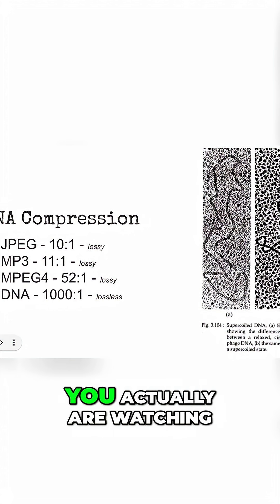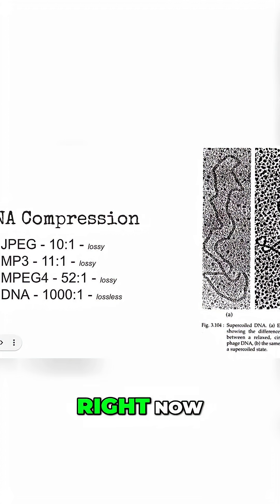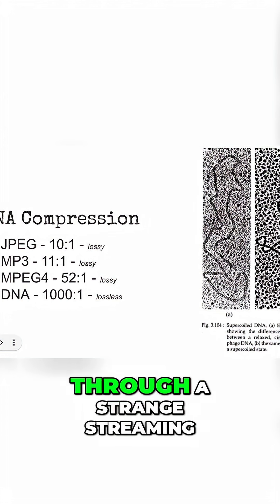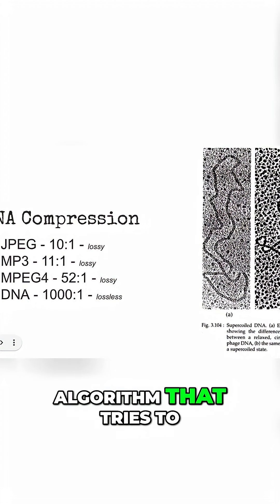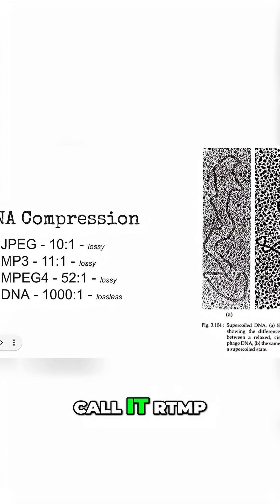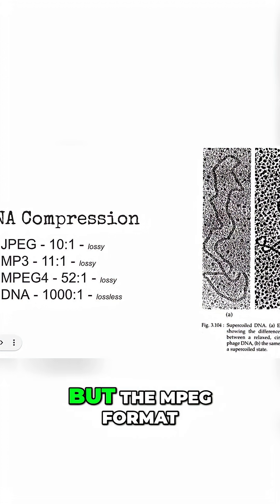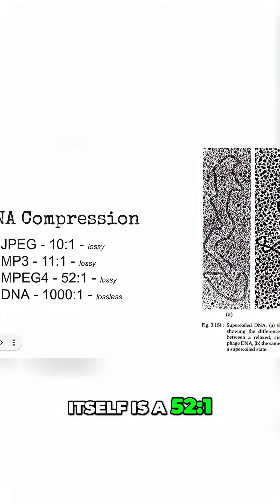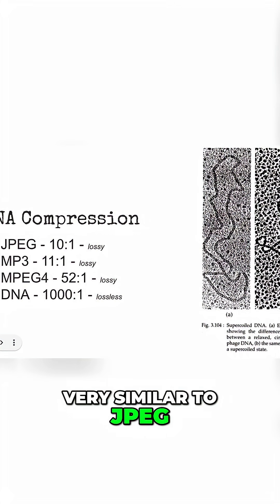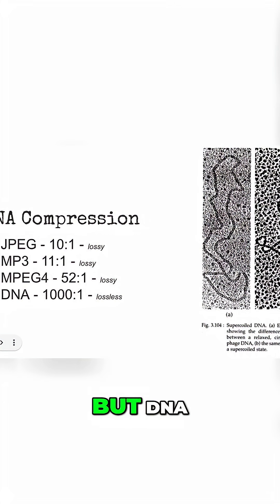MPEG — the video format that you're actually watching right now, technically through a streaming algorithm called RTMP — the MPEG format itself is a 52 to 1 compression, very similar to JPEG and MP3.